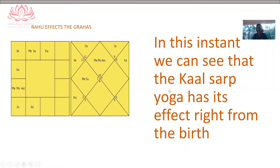There are certain parameters when Kalsarp Yoga is more effective. We know that Rahu is the face of the body of Rahu-Ketu. Here we see that Rahu, which is always moving in an anticlockwise direction, is facing the planets — it is moving towards the planets. As it moves in its transit, it will have a very strong effect on those planets.